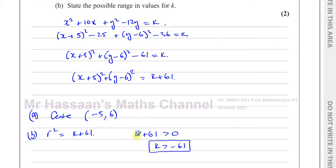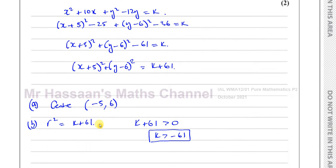Therefore k must be greater than negative 61 for that to be true. If k is greater than negative 61, you will always have a positive radius. If r squared is zero or negative there is no solution — r can't be zero because the radius of a circle can't be zero, and r squared can't be negative as r would be undefined. So that's the answer for question 6, part 1, a and b.